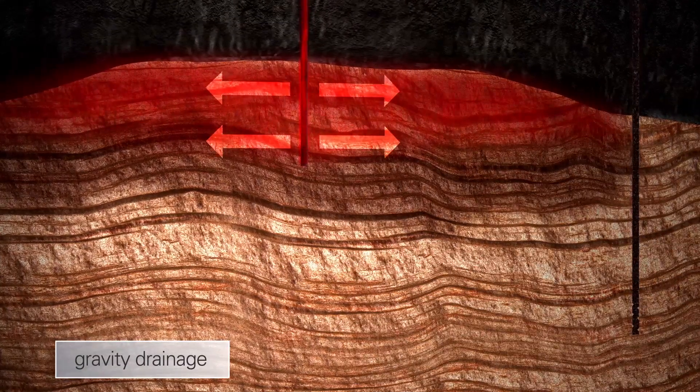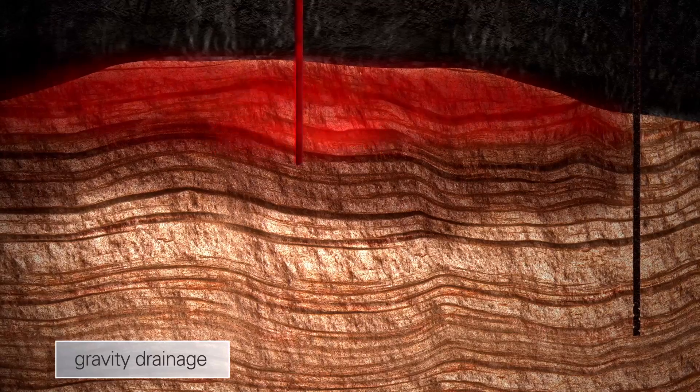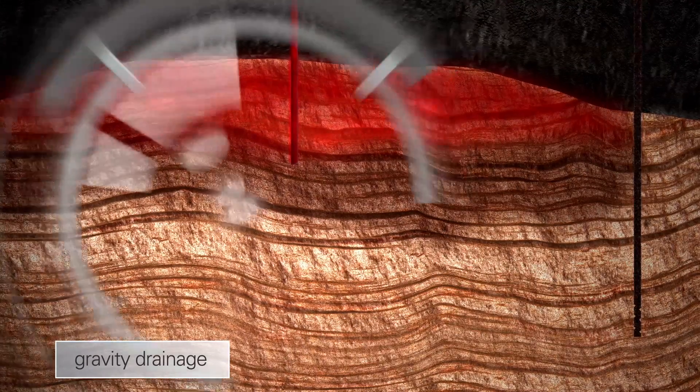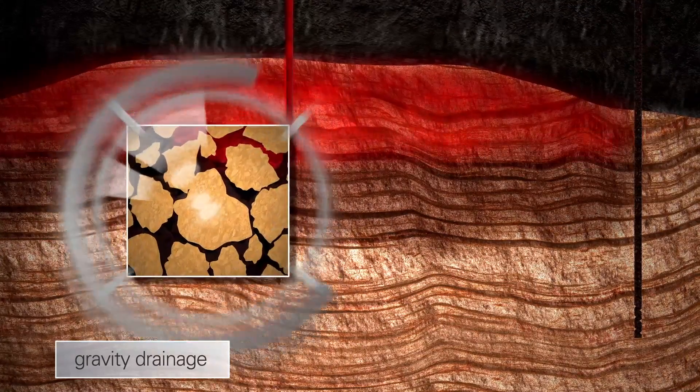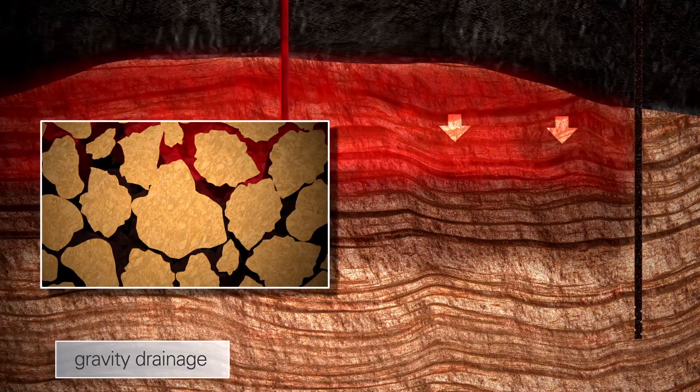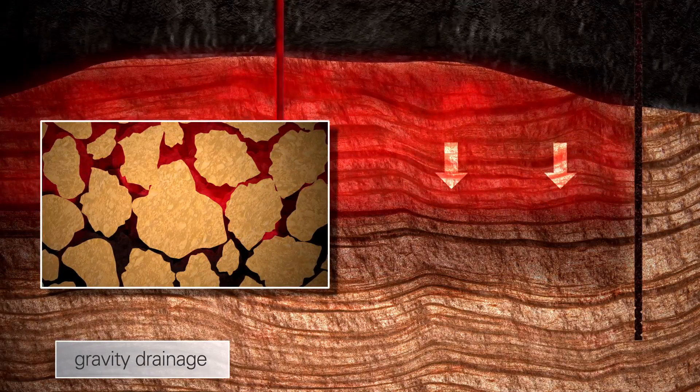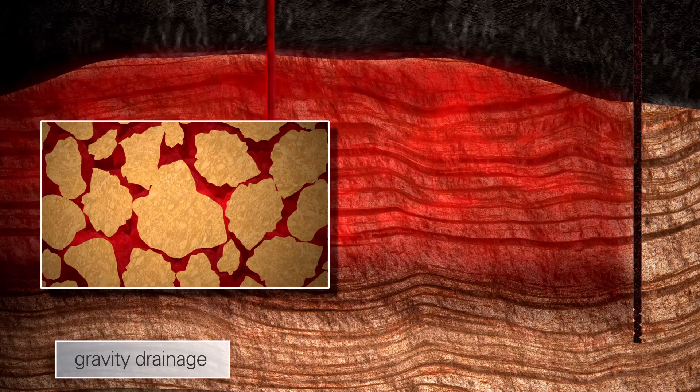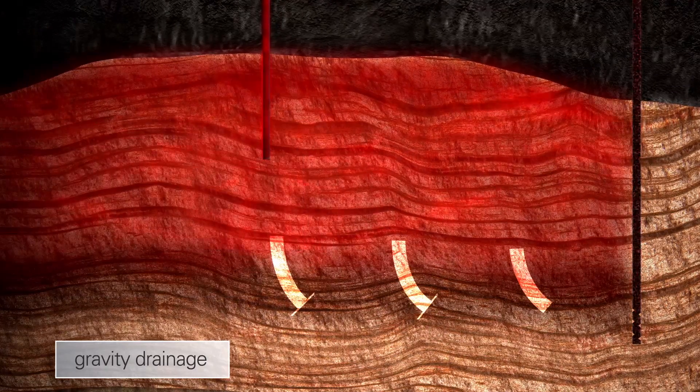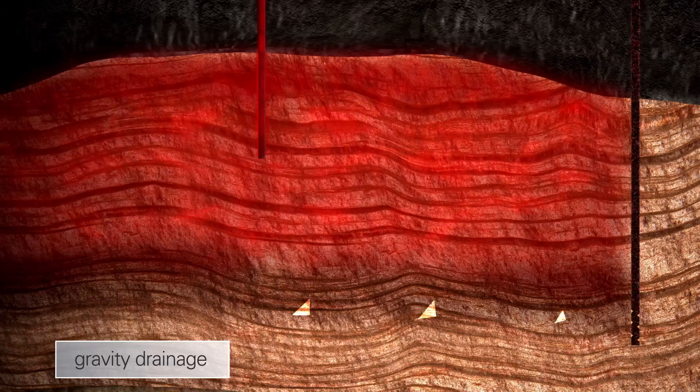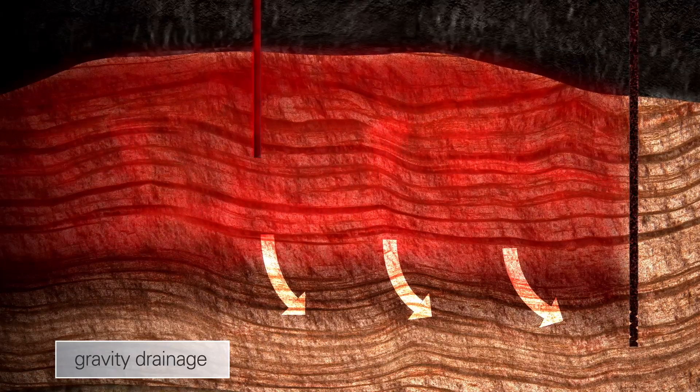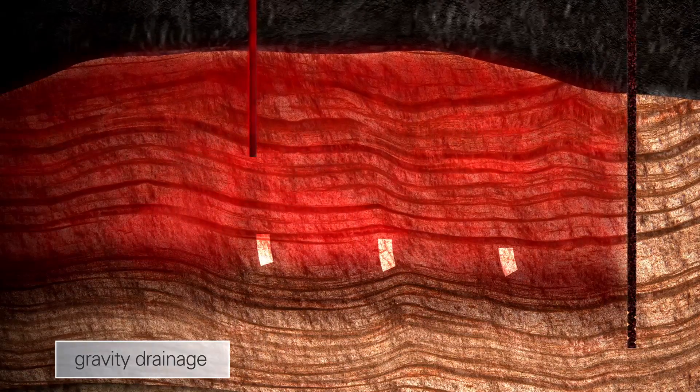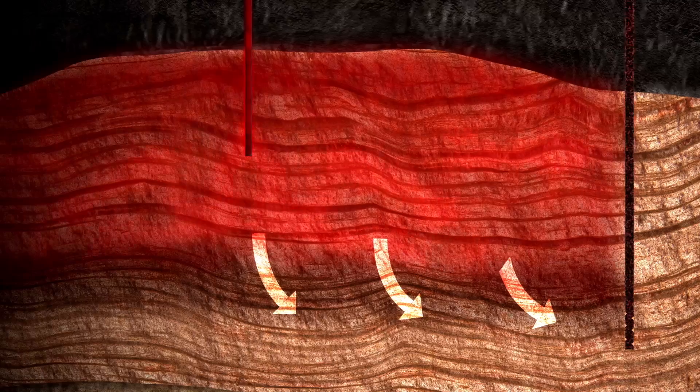Gas can be injected in the higher layers of the reservoir where it tends to stay as it is lighter than oil. With continuous injection the gas layer starts expanding downwards as a stable front due to its density difference with the oil. Some of the oil is pushed to the producers whilst oil behind the gas front continues to drain down, hence the name gravity drainage.